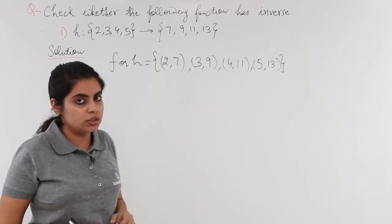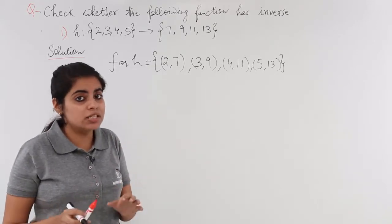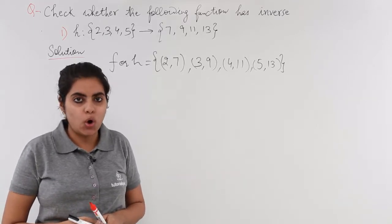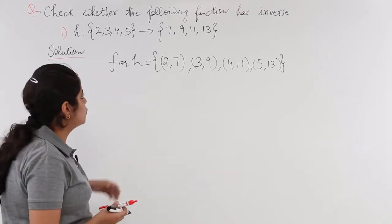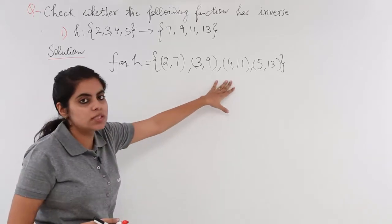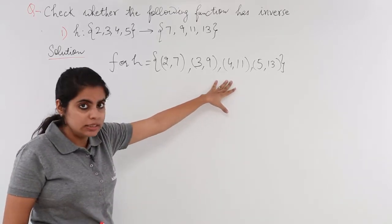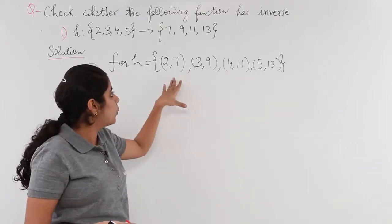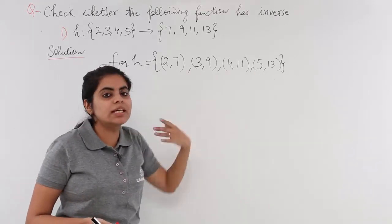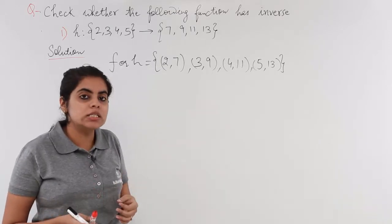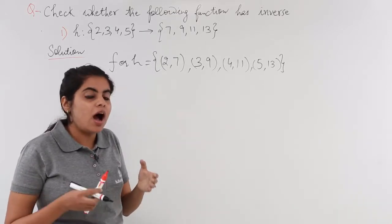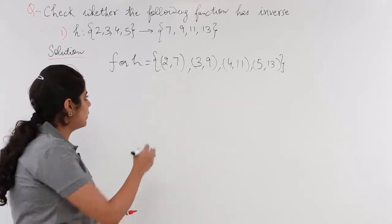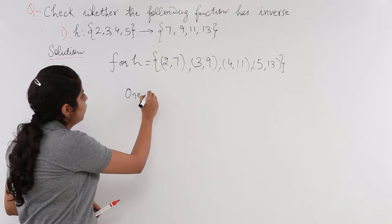One thing is sure that inverse of a function exists if and only if the function is bijective, that is one-one onto. So let me check whether this association is one-one. Yes it is one-one because different elements are associated with different elements of the second set. Since different elements of the first set are associated with different elements of the second set, so it is one-one, so yes it is a one-one function.